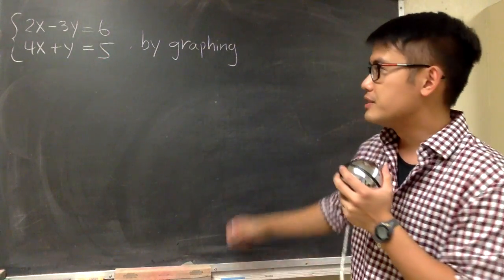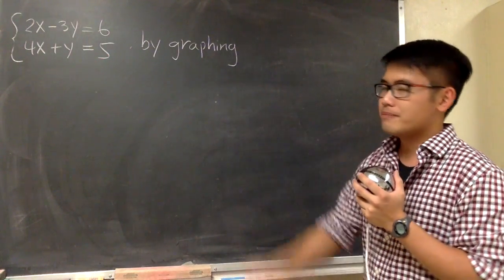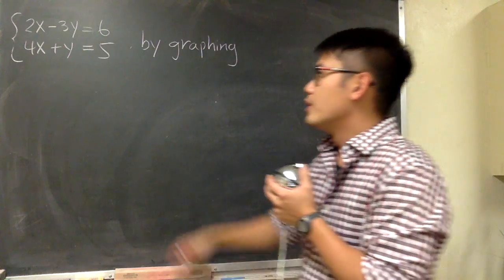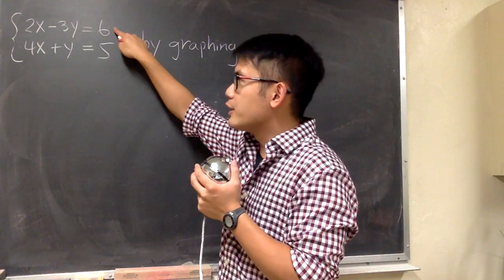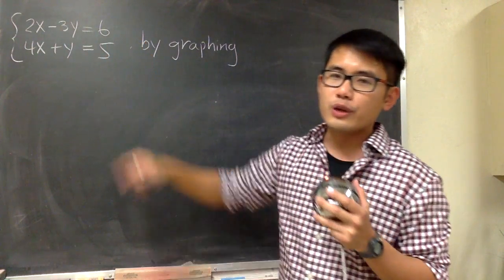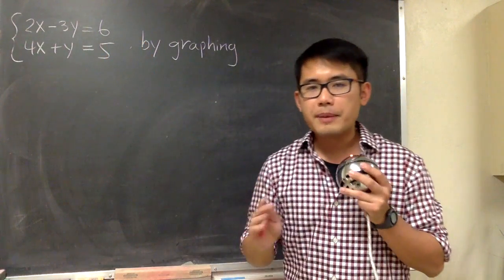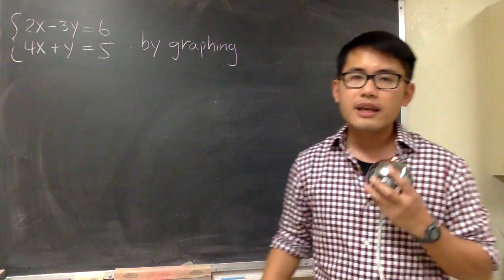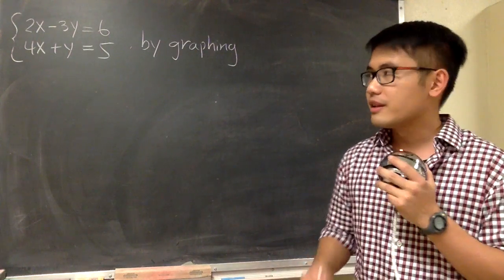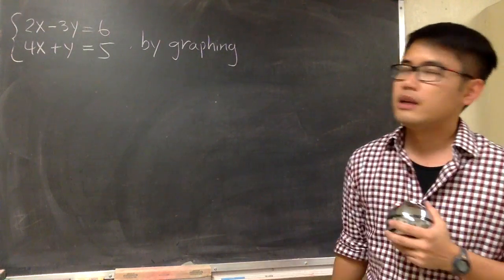The first method is to graph them. Graph the first equation, and then graph the second equation on the same x and y plane, and look for the intersection.